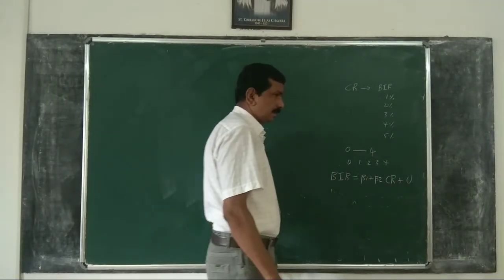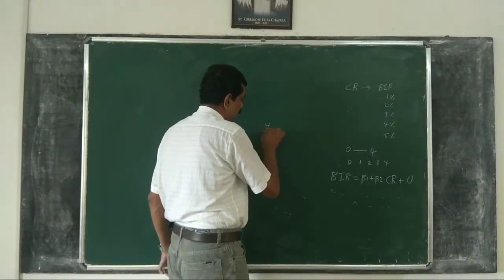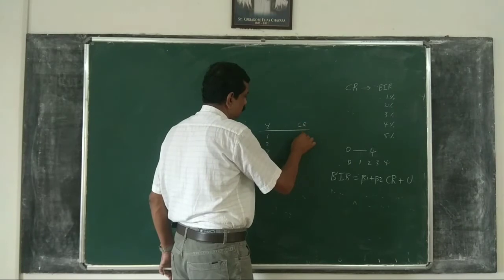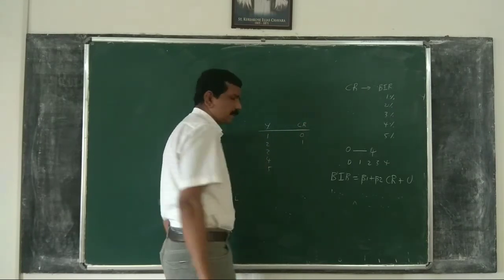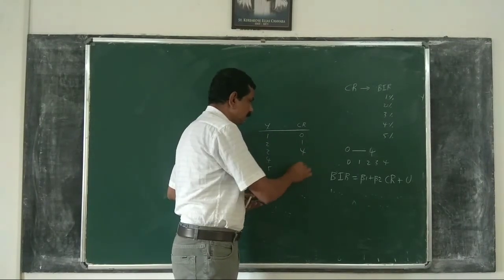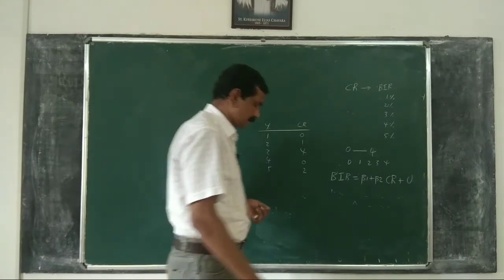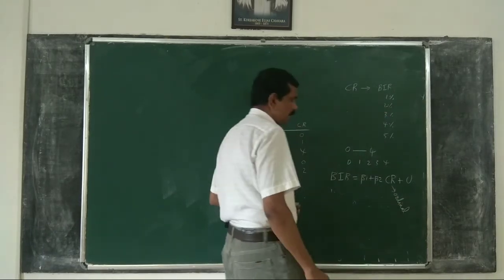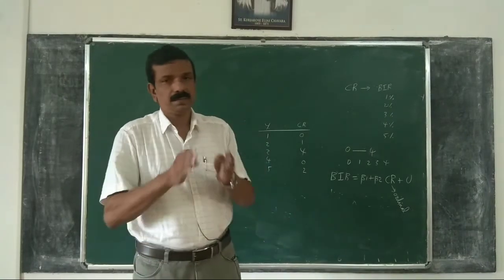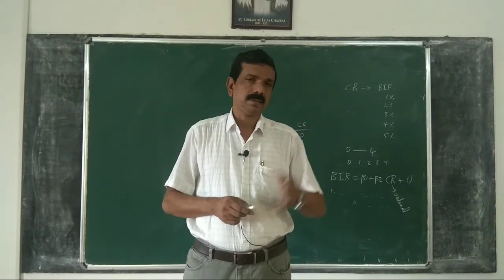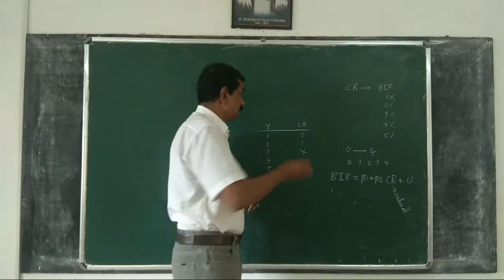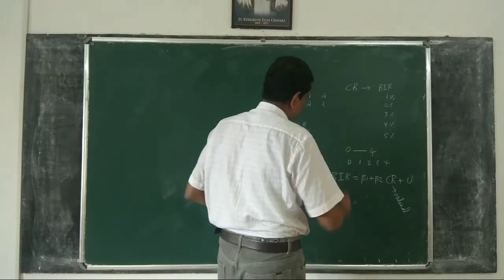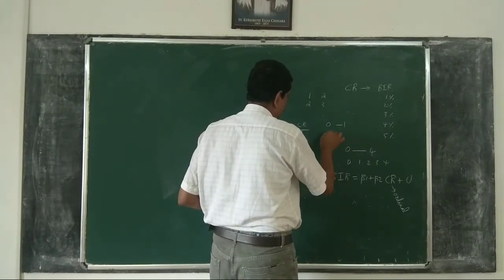The problem here is that credit rating is an ordinal variable, not a ratio-scale quantitative variable. So we cannot give a meaningful interpretation to credit rating as we do for quantitative regressors. For quantitative variables, the difference between 1 and 2 equals the difference between 2 and 3. But for credit rating, the difference between 0 and 1 need not equal the difference between 2 and 3.